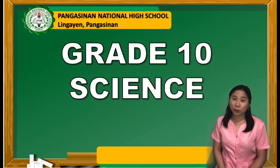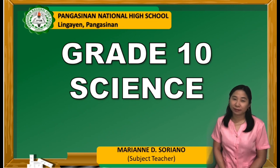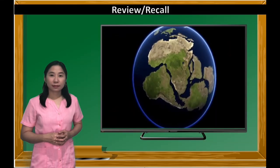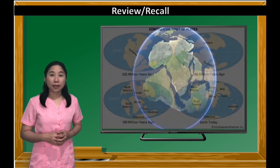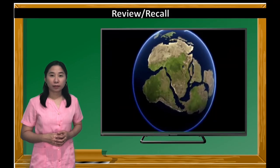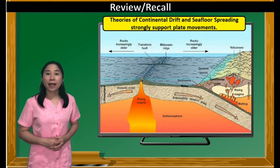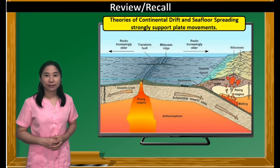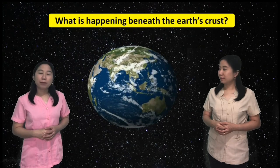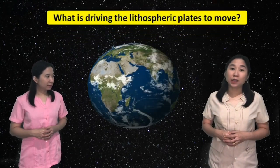Hello students, welcome to Grade 10 Science Lessons, and I'm your teacher, Ma'am Marian Soriano. You have learned from our past lessons that continents are gradually moving, as claimed by Alfred Lothar Wegener on his Continental Drift Theory, and strongly supported by sea-floor spreading of Harry Hammond Hess based on observed evidence at Mid-Oceanic Ridge. But what is really happening beneath the Earth's crust? What is driving the lithospheric plates to move? Let's find out in today's lesson.